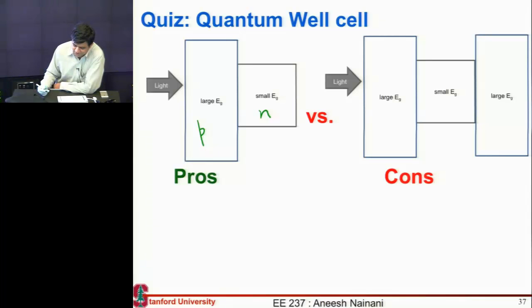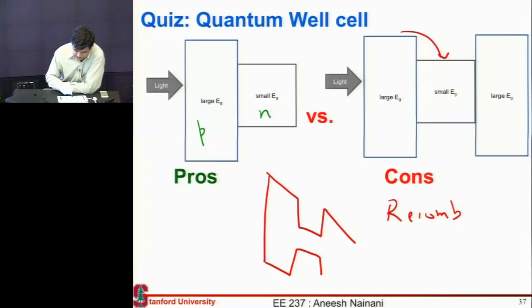So what do I need to do to get the, so you're right, I'll get a lot of recombination. Somehow, since this bandgap is like this, I'll get a lot of recombination. So what would that do? It will make it like this. Is this a good solar cell?